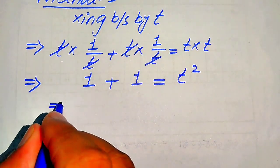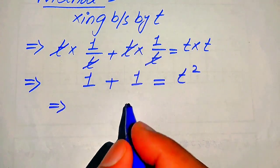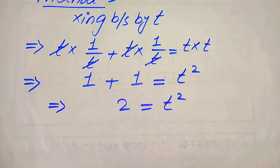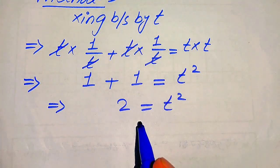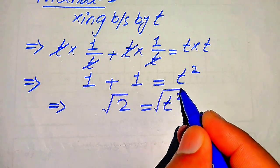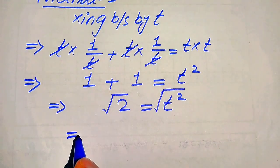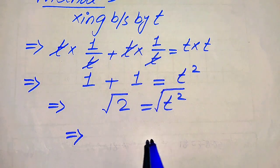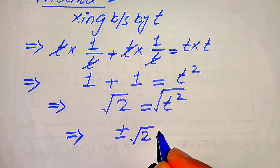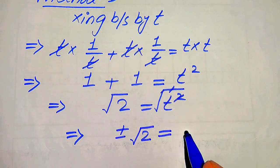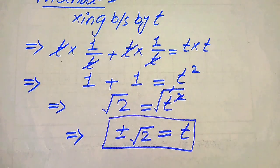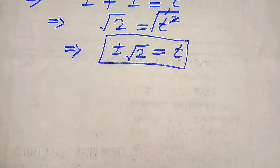On the left-hand side, 1 + 1 gives us 2, so we have 2 = t². To find the values of t, we take the square root on both sides, giving us ±√2 = t. These are the two values of t from the first method.